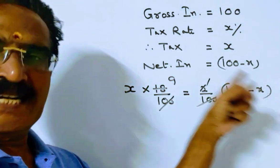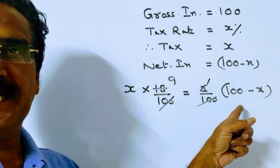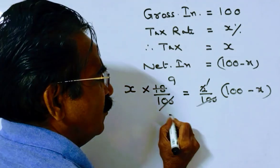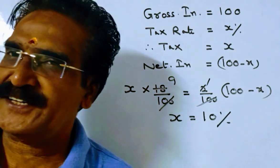9x plus x equals 100, so 10x equals 100, which means x equals 10. So the income tax rate is equal to 10 percent. Thank you.